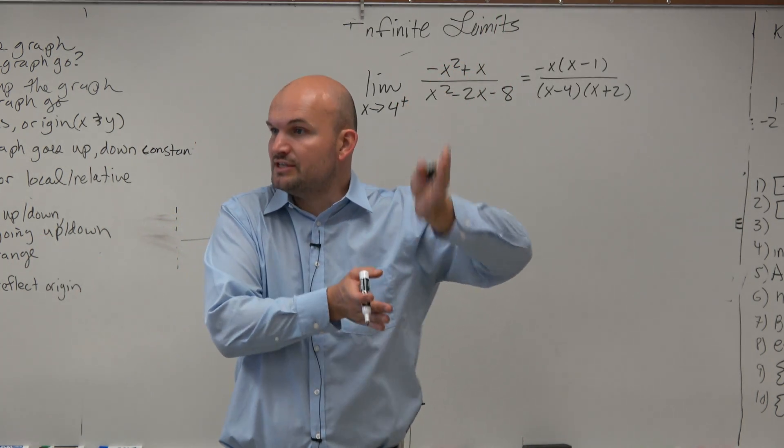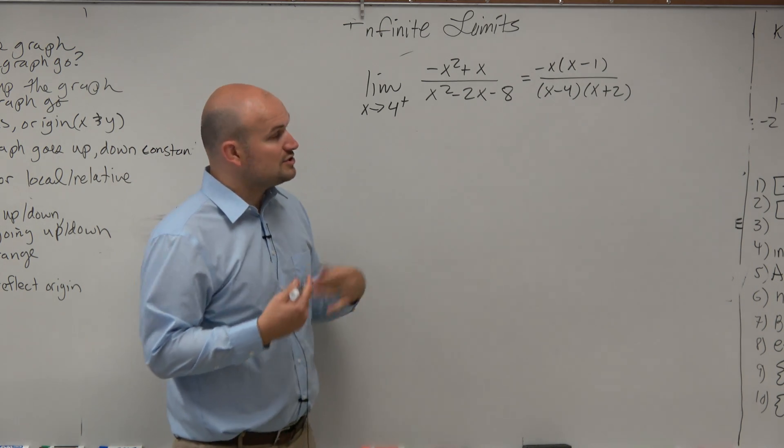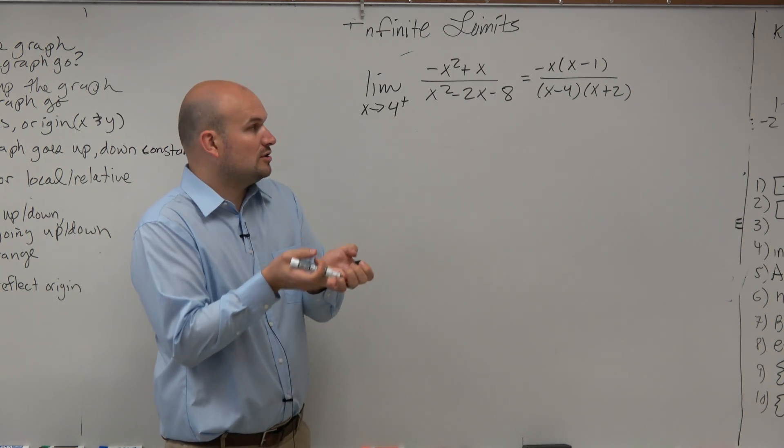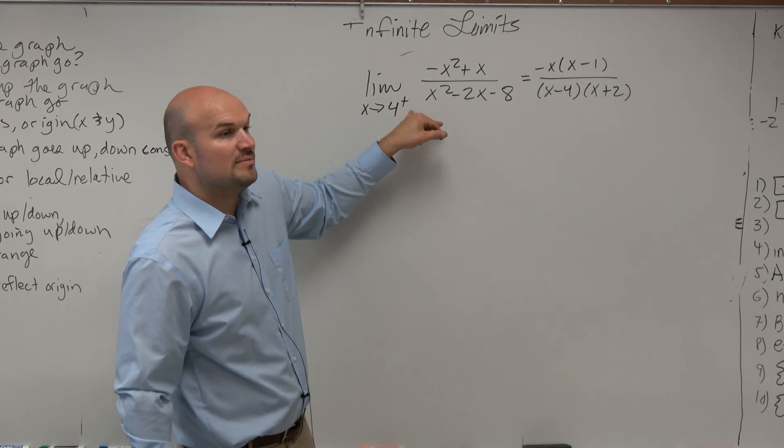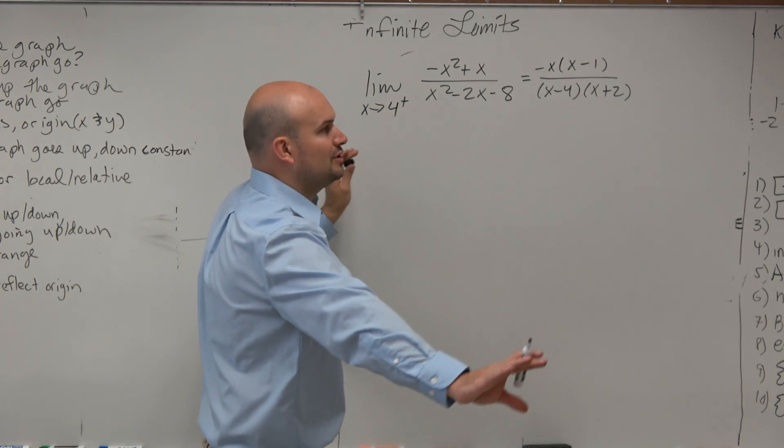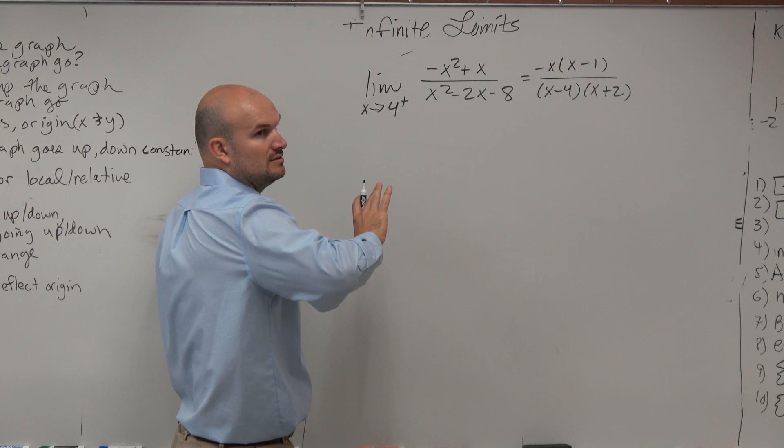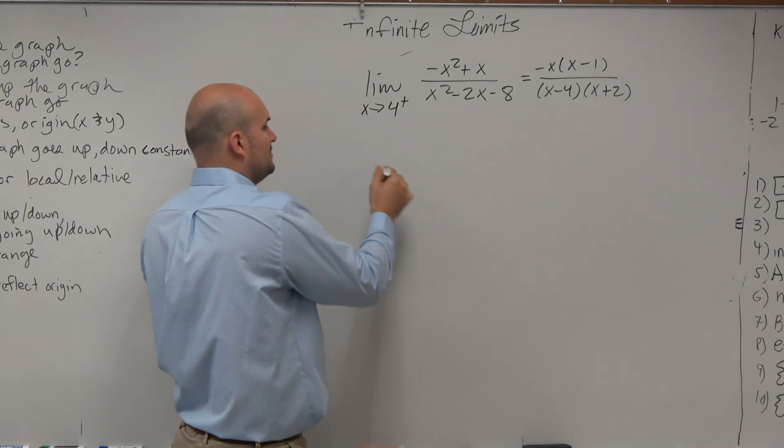So you want to make sure you know the graph is either going to go to one of those two, right? So now let's go and use our limit. Let's pick a number that's going to be really, really close to 4 from the right-hand side. So what's the number really, really close to 4 from the right?